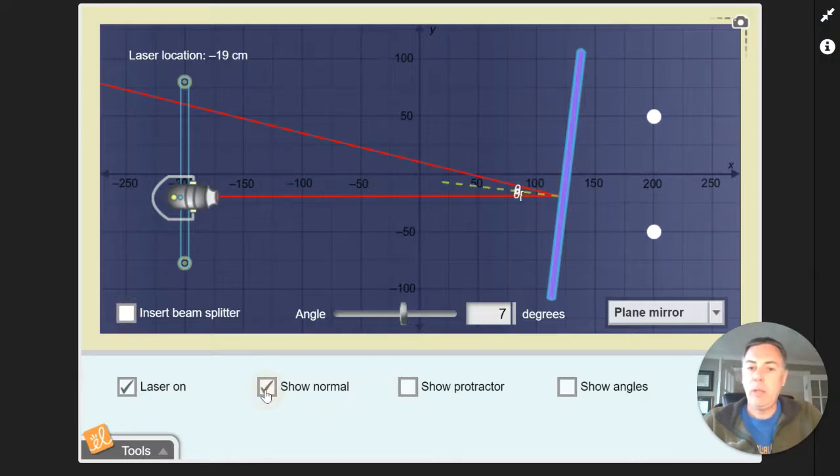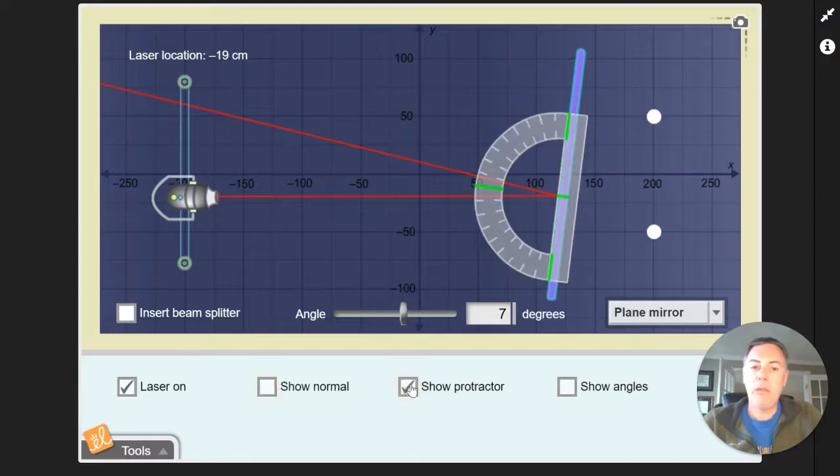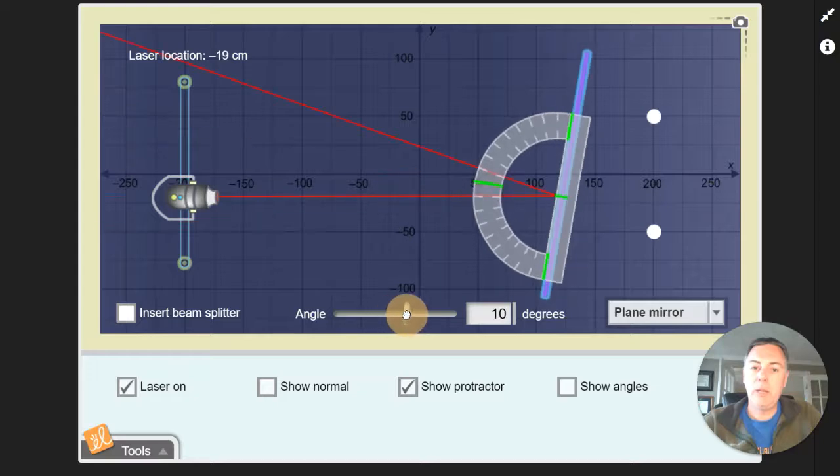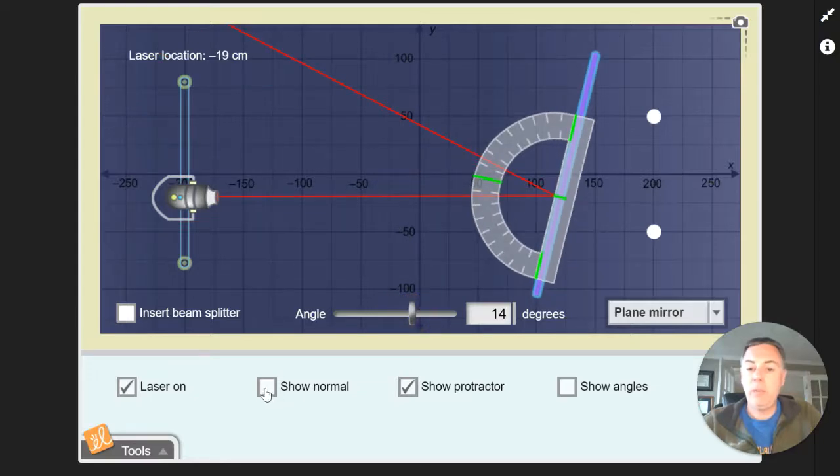The other thing that you can do is we can put in a normal line—the normal line is perpendicular to the surface of the mirror. You can also put in a protractor so you can measure what those different angles are.